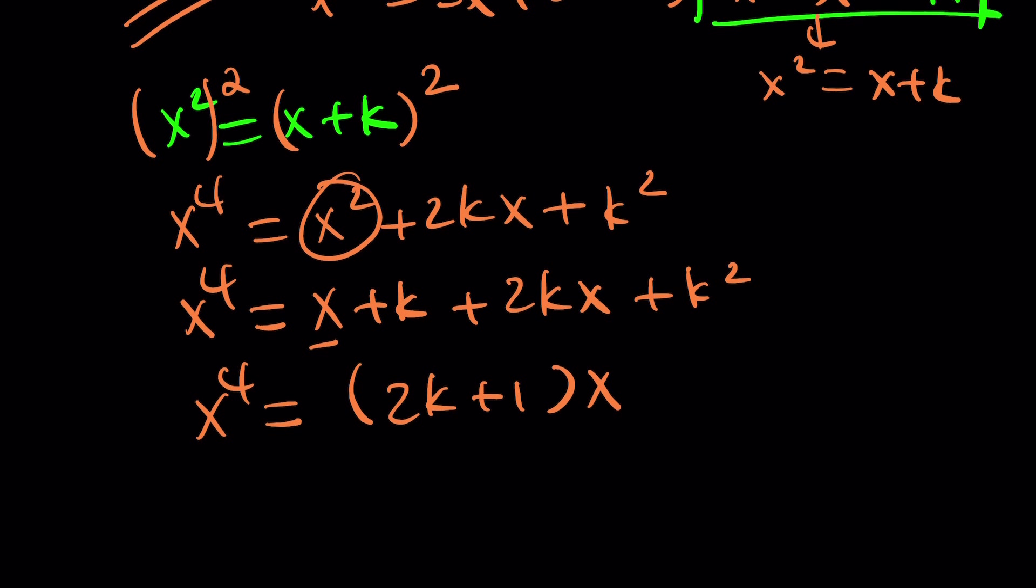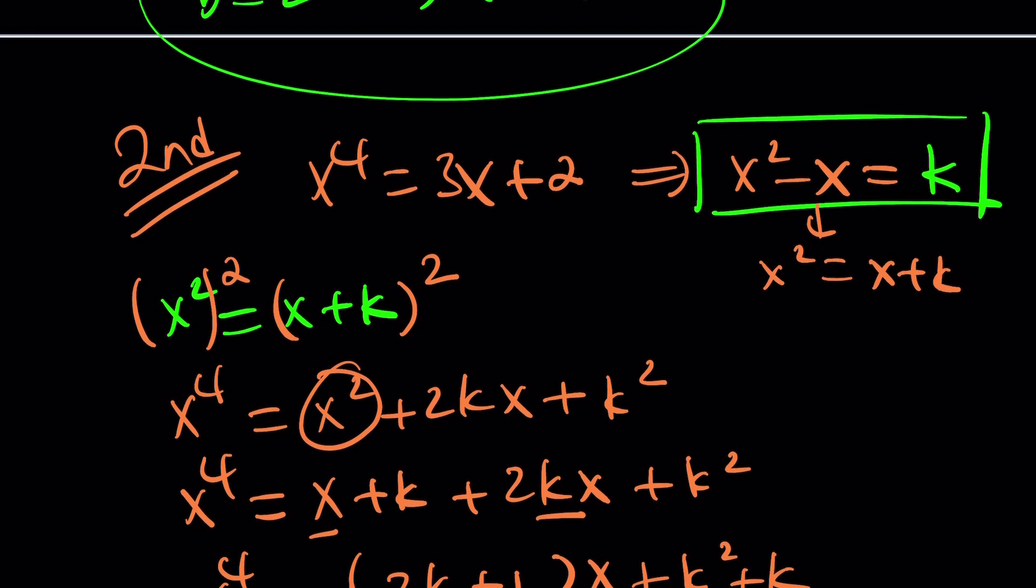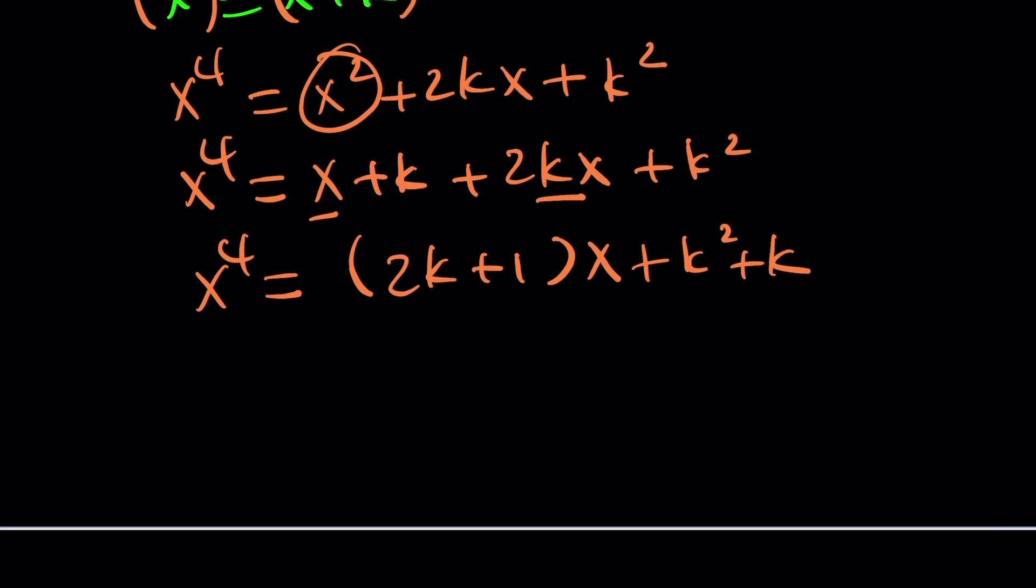And this means x to the fourth equals 2k plus 1 times x plus k squared plus k. But, wait a minute. Our original equation gave us something like that: 3x plus 2. So if this is 3x plus 2, and if this is true, then this must be a 3, and this must be a 2. Can that happen at the same time, those two things?